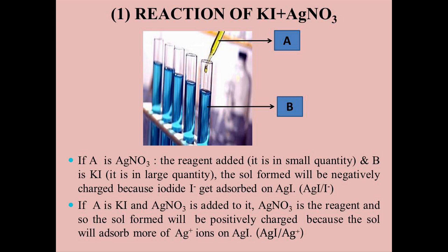Now consider the same reaction in the reverse manner — when potassium iodide is added to silver nitrate solution, a positively charged salt is formed because silver ions get adsorbed from the dispersion medium onto silver iodide. So the product formed will be AgI/Ag⁺, which is positively charged.